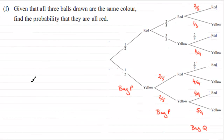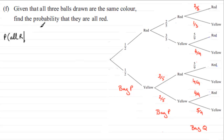For the last part of this question, we're given that all three balls drawn are the same color and we've got to find the probability that they're all red. This is a typical conditional probability question. We've got to work out the probability that all are red, given that all three are the same color.